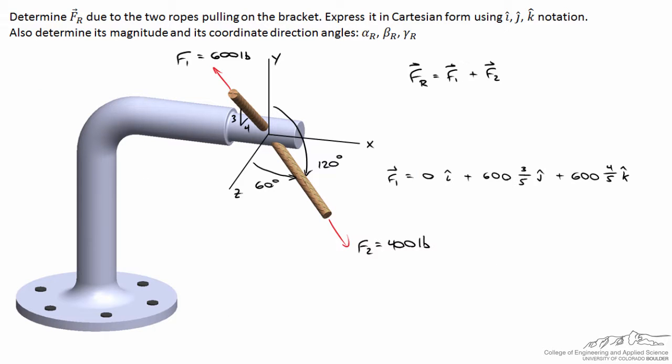By inspection from this view we can tell that F1 has no component in the x direction, and the 600 pounds acts three-over-five in the y direction and four-over-five in the z direction. So F1 equals zero i-hat plus 360 pounds j-hat plus 480 pounds k-hat.